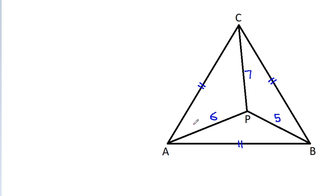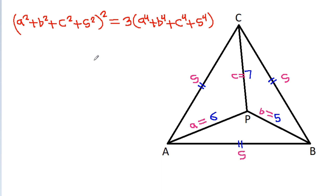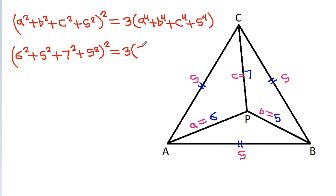Here, a is equal to 6, b is equal to 5, and c is equal to 7, and suppose the side length is s. Then a squared plus b squared plus c squared plus s squared, squared, is equal to 3 times a to the power 4 plus b to the power 4 plus c to the power 4 plus s to the power 4.